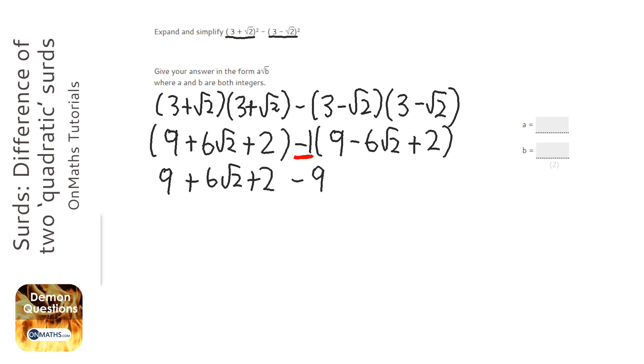So that first one is minus 9. The second one is, well, minus times a minus is a positive 6 root 2. And then a minus times a positive is a minus, so minus 2.